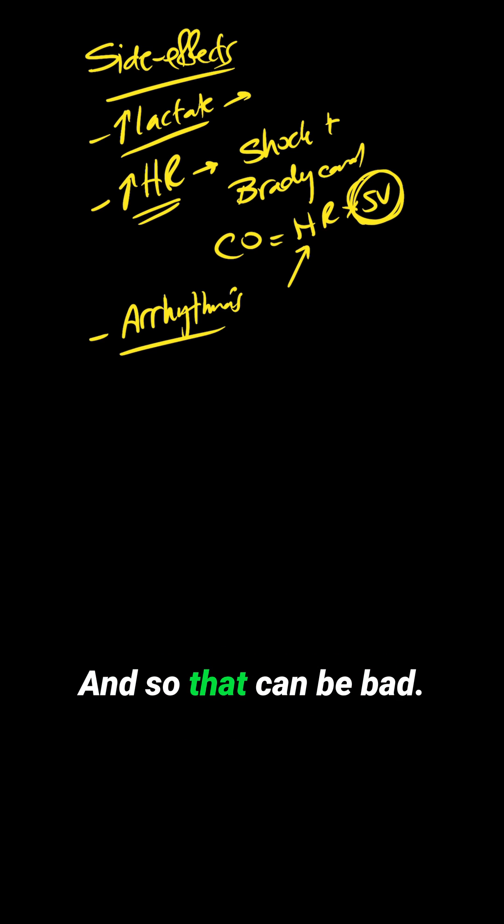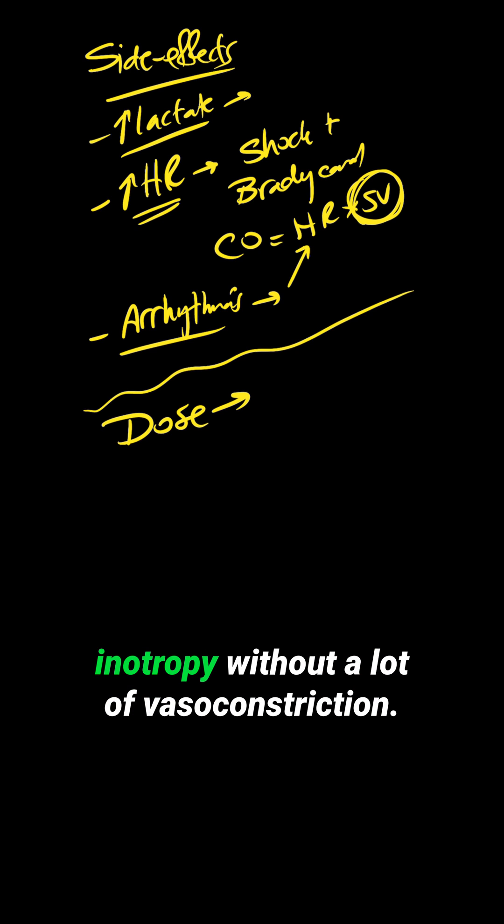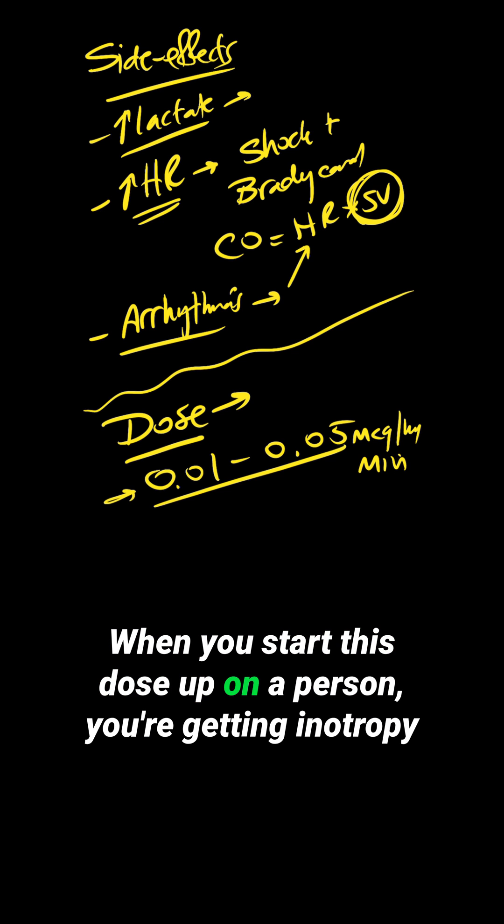It can also increase your arrhythmias, and that can be bad. So what's this magical dose of epinephrine that gives you inotropy without a lot of vasoconstriction? The dose is 0.01 to 0.05 micrograms per kilogram per minute. When you start this dose up on a person, you're getting inotropy.